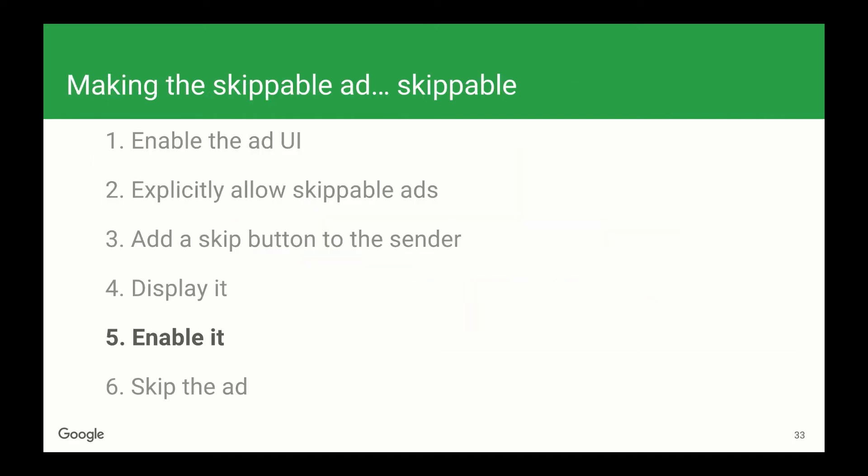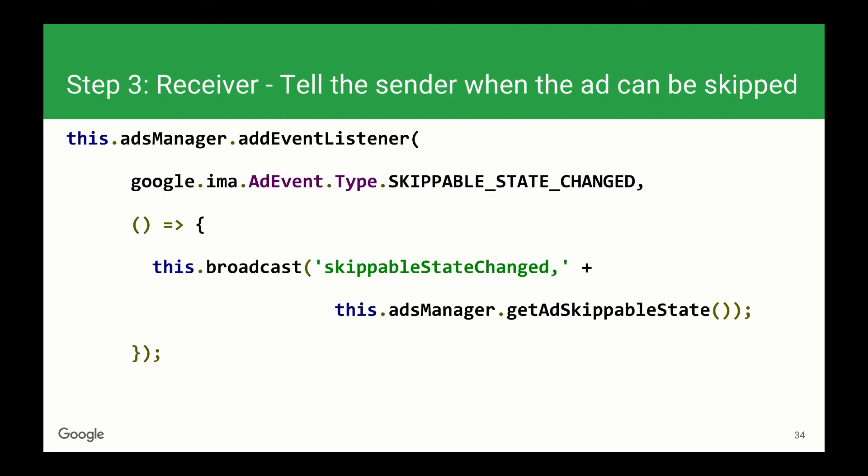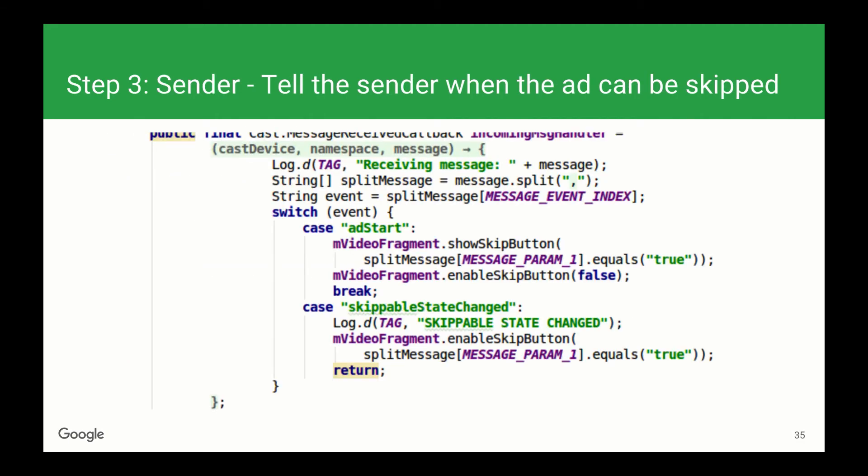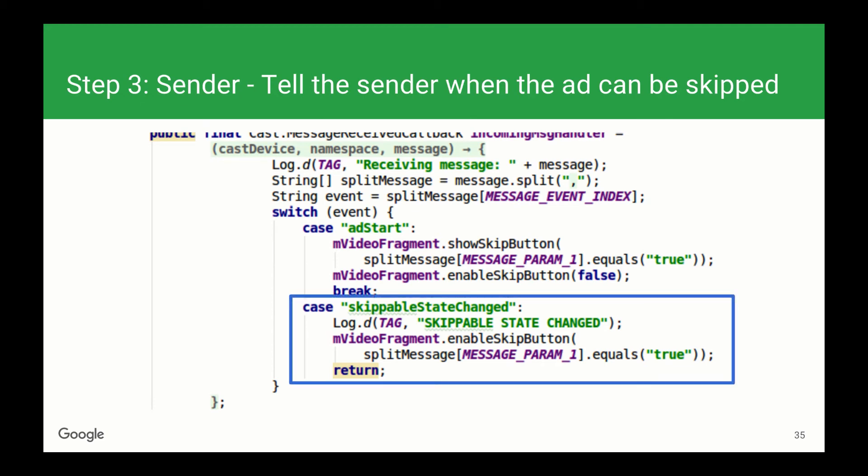Now that we're displaying the skip button, we need to enable it when the skip button becomes clickable. Luckily, the SDK already has an event for this, which is skippableStateChanged. We'll listen for that event and again use the message bus to send the skippableStateChanged command along with the skippable state of the ad. On the sender, we just expand our switch statement to include the skippableStateChanged command and call enableSkipButton with the provided parameter. This will enable taps on the skip button.